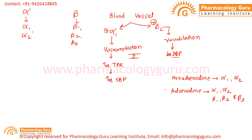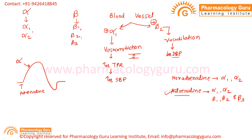So here it is very important. H.H. Dale studied the effect of adrenaline. When he injected adrenaline, he initially observed an increase in blood pressure, and then after, he found a decrease in blood pressure. What he analyzed was that initially the blood pressure increased because of the activation of alpha 1 receptors — so an increase in systolic blood pressure was observed.